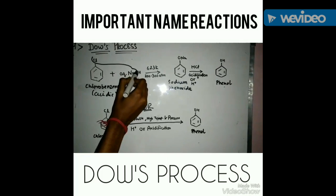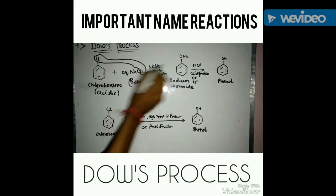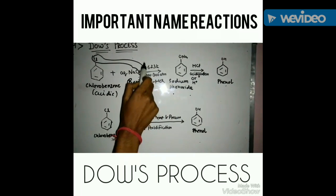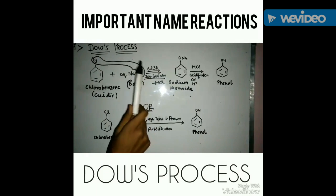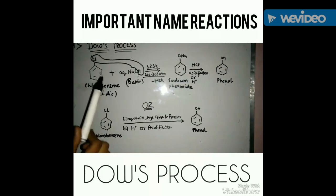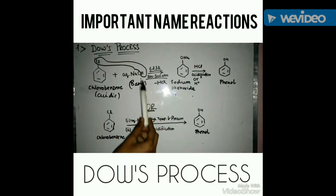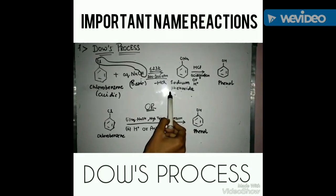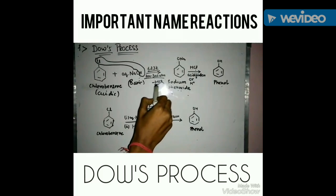The reaction is as follows: HCl is released and the salt sodium phenoxide (ONa) is formed. The important part is the temperature range and the pressure range. The Dow's Process is carried out under drastic conditions, meaning high temperature and pressure — 623 Kelvin and pressure range of 200 to 300 atm.